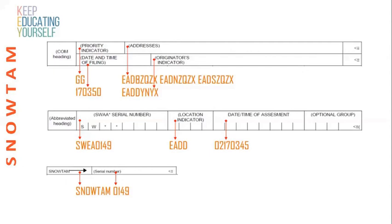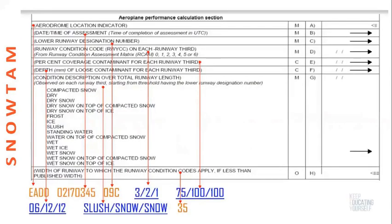The serial number will be generated automatically. In the first part — the aeroplane performance calculation section — we have the aerodrome location indicator. We have already calculated this in the runway condition report section. It is mandatory (M) in the SNOWTAM format. Here we write ECO Alpha Delta Delta, which we have already filled in.